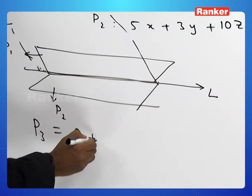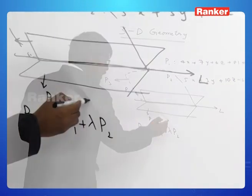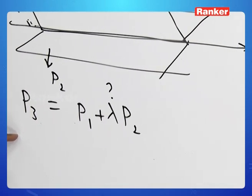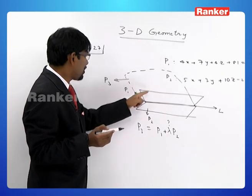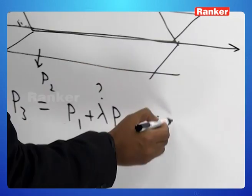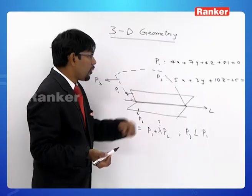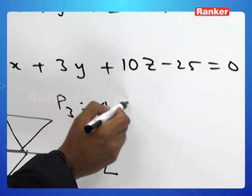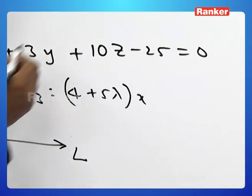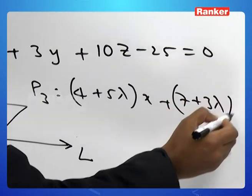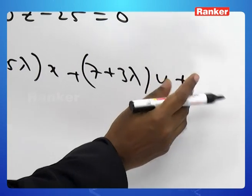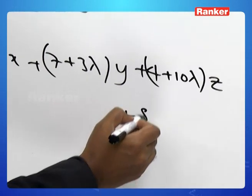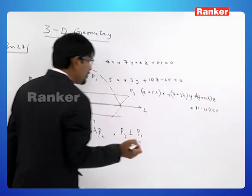Let us call the new plane P3. After rotation, P1 has turned into P3. P3 also passes through line L. So P3 can be written in the form P1 + λP2, which gives: (4 + 5λ)x + (7 + 3λ)y + (4 + 10λ)z + (81 - 25λ) = 0.